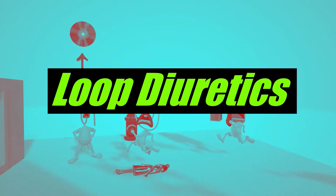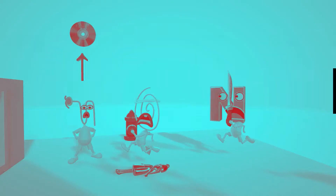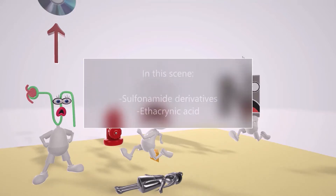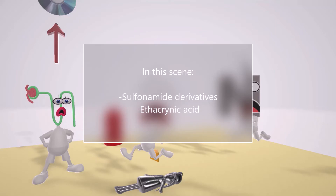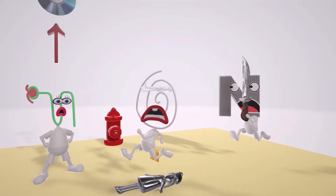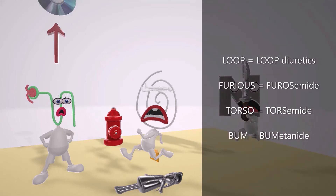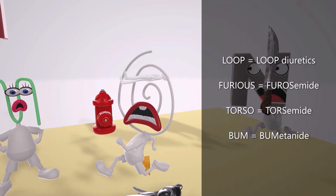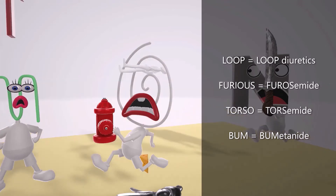In this scene we're going to talk about the loop diuretics, represented by a loop character who has diarrhea and needs to use the bathroom. We'll start with the sulfonamide derivatives and then talk about ethacrynic acid. The loop is furious — reminding us of furosemide — and inside his loop is a torso for torsemide, and we can see the bum of a horse for bumetanide. So furosemide, bumetanide, and torsemide are the loop diuretics we want to discuss first.